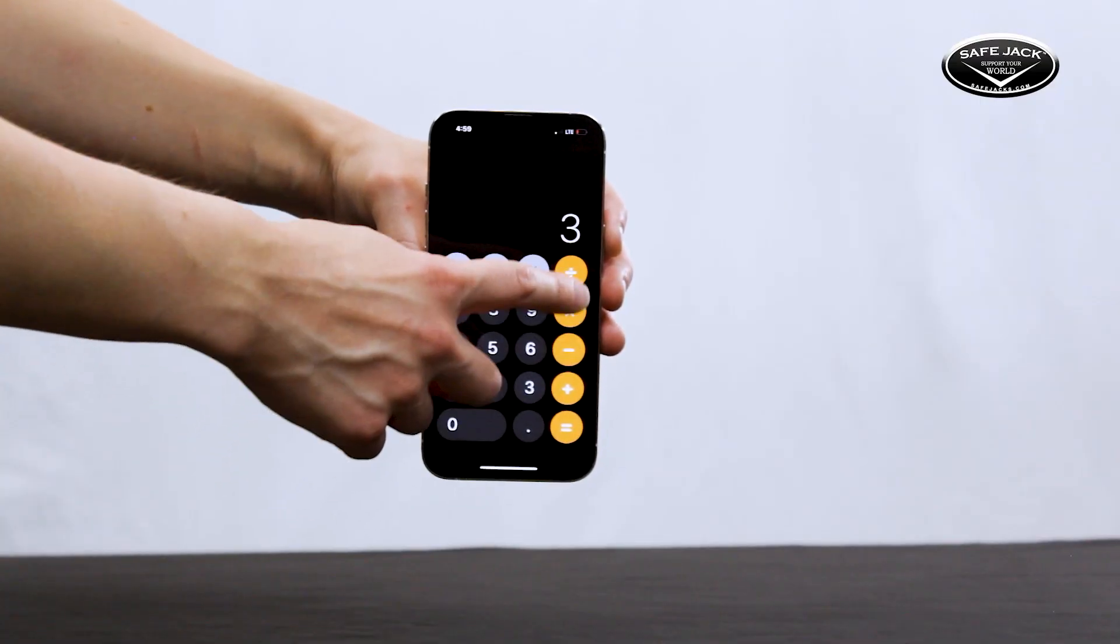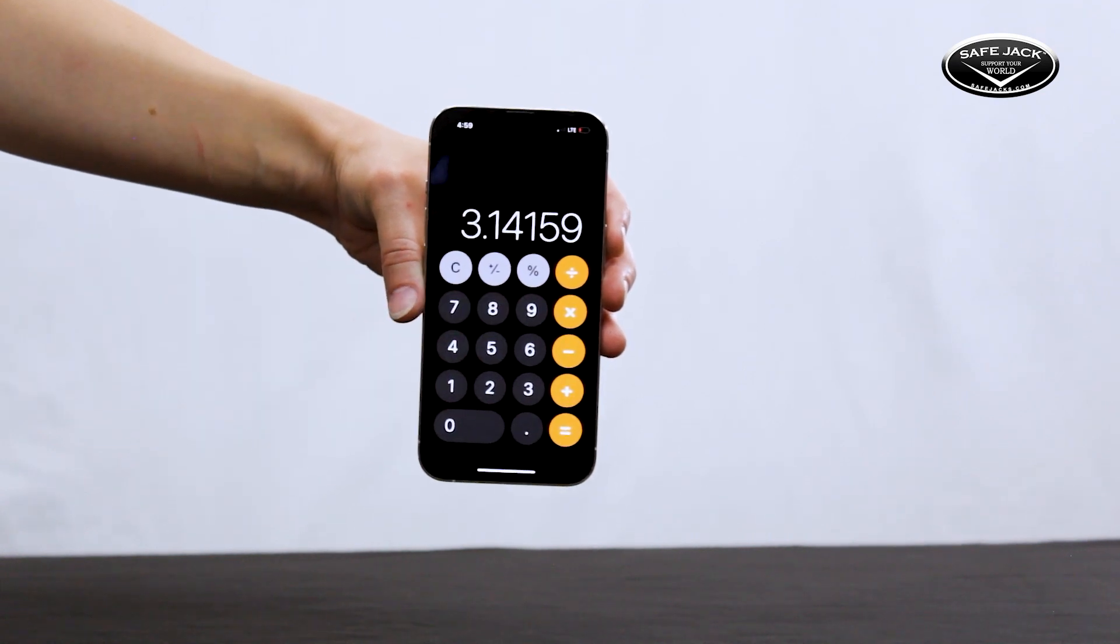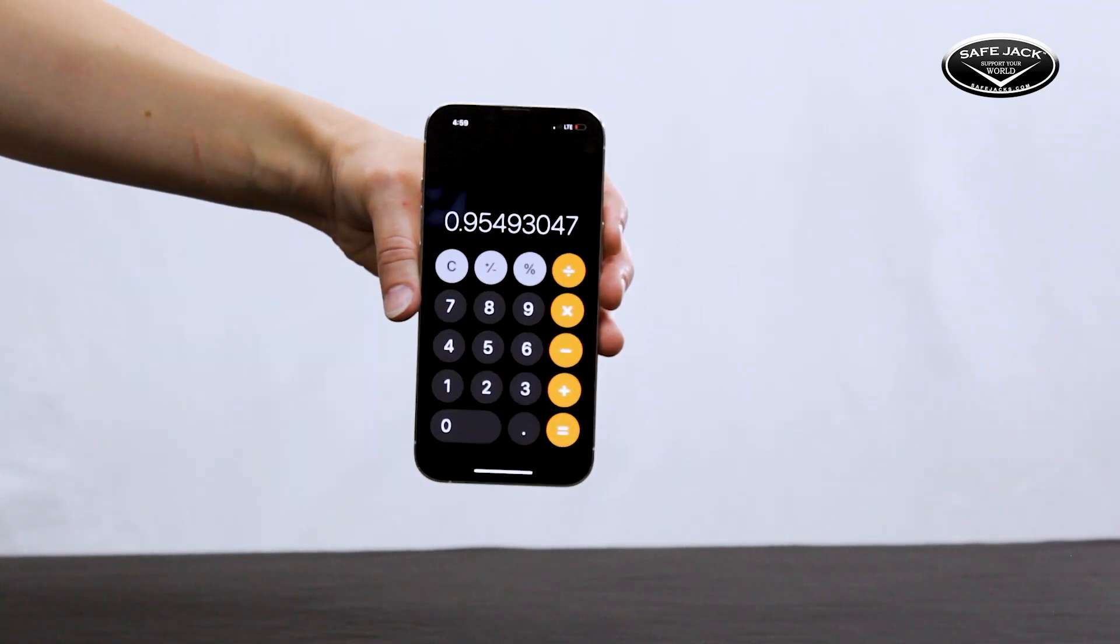Now grab a calculator, type this measurement in, and divide it by pi. That's 3.14159. This is your screw diameter.